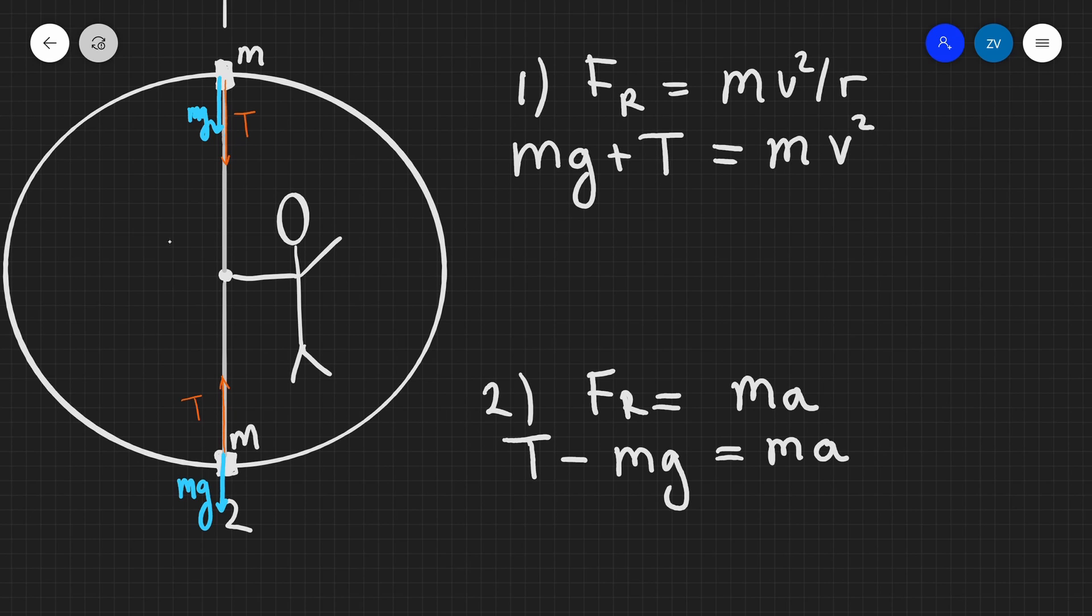So rather than acceleration, we can just write v squared divided by r in all of those circumstances. Like so. So mv squared over r, just our centripetal acceleration.